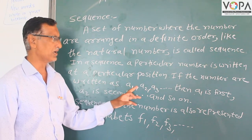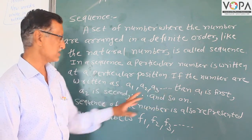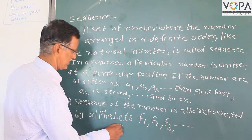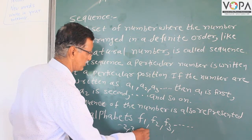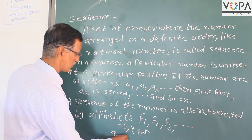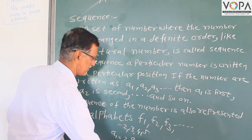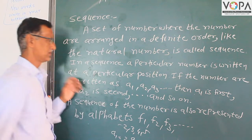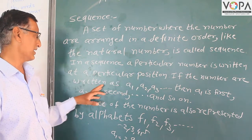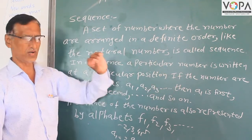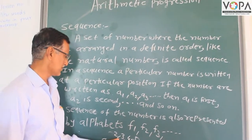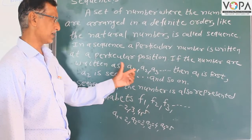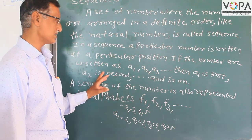In a sequence, if the numbers are written as a1, a2, a3, then a1 is the first term and a2 is the second term. For example, in the sequence 2, 3, 4, 5: a1 equals 2, a2 equals 3, a3 equals 4, and a4 equals 5. Each number occupies a particular position, and the arrangement is represented as a1, a2, a3 and so on.